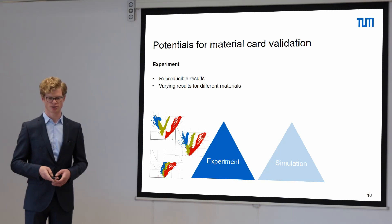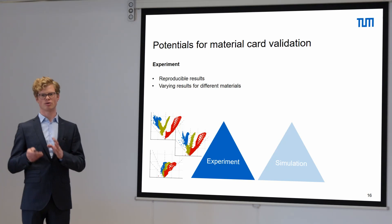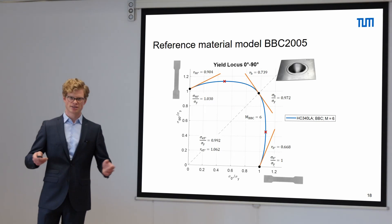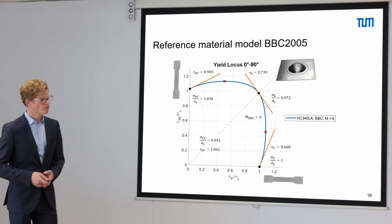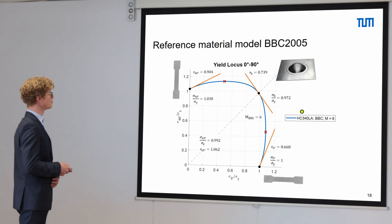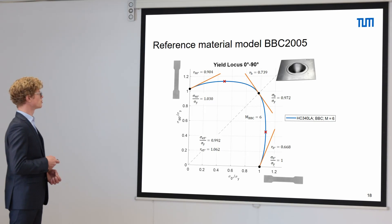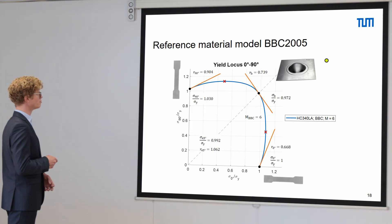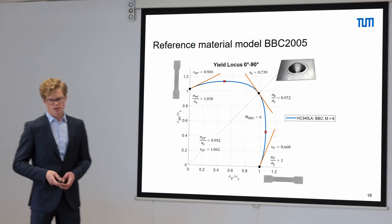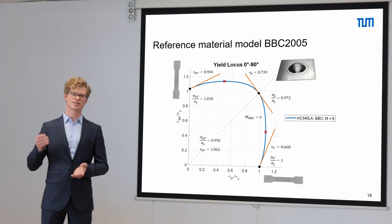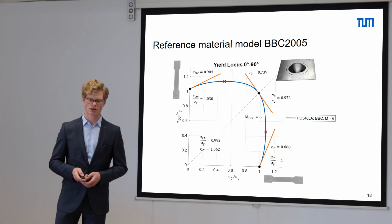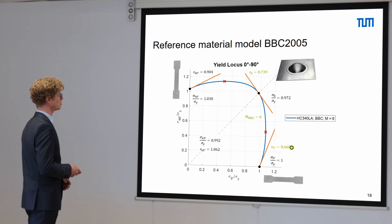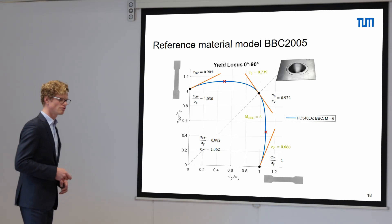Let's take a look at the simulation side and the numerical analysis. As a basis we used a material model for the micro-alloyed steel HC-340LA, using AutoForm with the yield locus description BBC2005. This yield locus model was based on uniaxial tensile tests and a biaxial hydraulic bulge test. In order to investigate the sensitivity of the model parameters regarding the resulting strain distributions, we took three parameters of the model: the uniaxial anisotropy coefficient r0, the biaxial anisotropy coefficient rB, and the curvature exponent for the BBC model M.